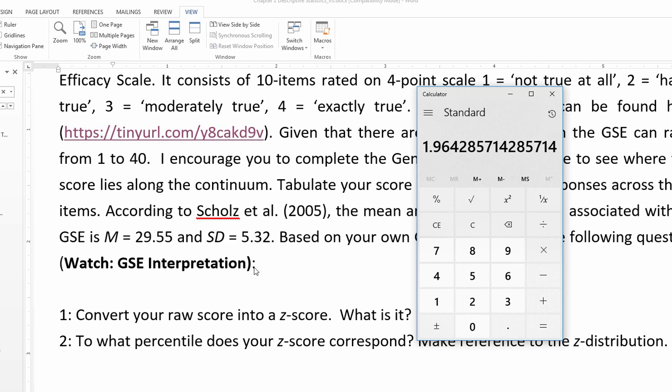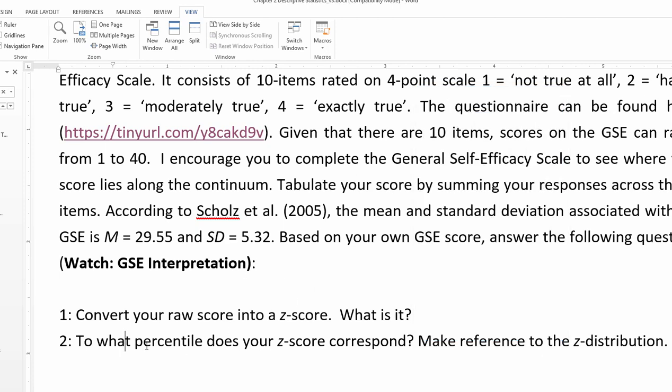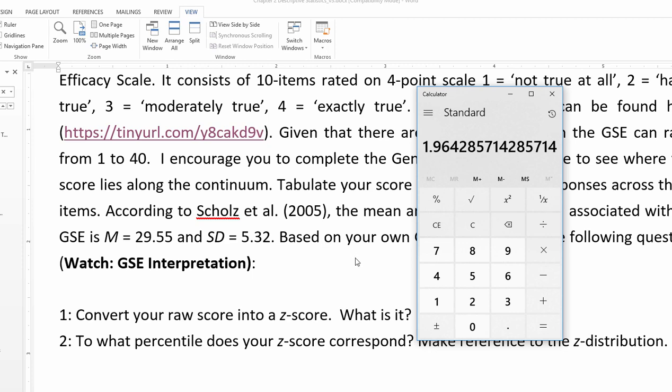So let's see what exactly it corresponds to. To answer the first question, convert your raw score to a z-score. Well it depends on what you actually scored. If you scored 40 you got a score of 1.96.